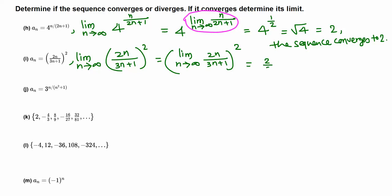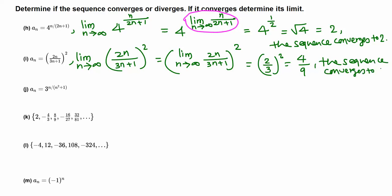So the limit is 2 thirds squared, which is 2 squared over 3 squared, giving 4 over 9. The limit of this generic term is 4 ninths, which means this sequence converges to 4 over 9.